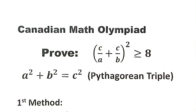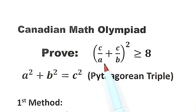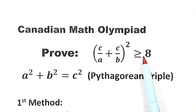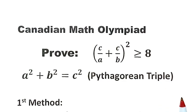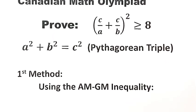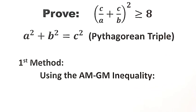In this video we'll be solving a question from the Canadian Maths Olympiad. The question is to prove this inequality: that (c/a + c/b)² is bigger than or equal to 8, given that a² + b² = c². So this is a Pythagorean triple. We have to use two methods to prove this inequality.